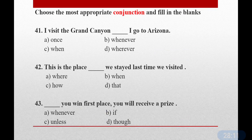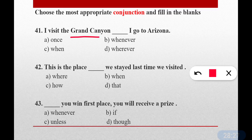Next, conjunctions — find the appropriate conjunction to fill in the blanks. Question number forty-one: I visit the Grand Canyon dash I go to Arizona. The correct answer is option B — whenever. Whenever I go to Arizona, I visit the Grand Canyon. 'Whenever' means every time that happens.